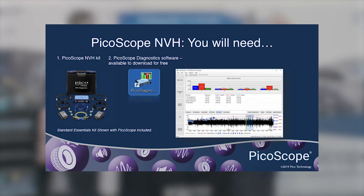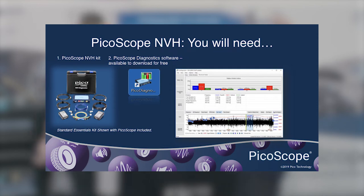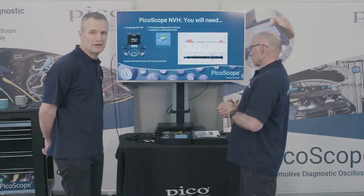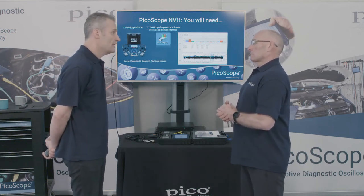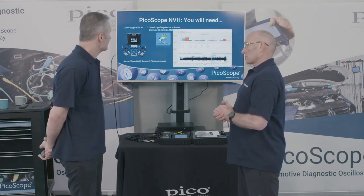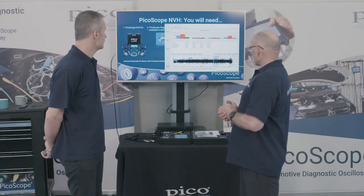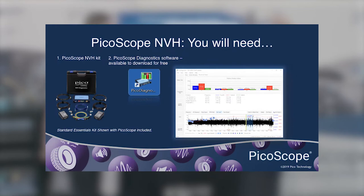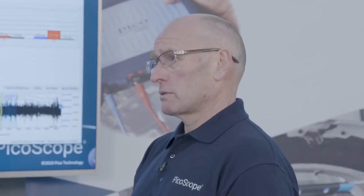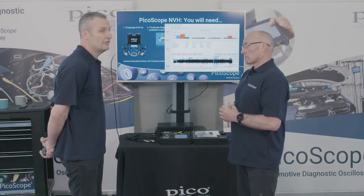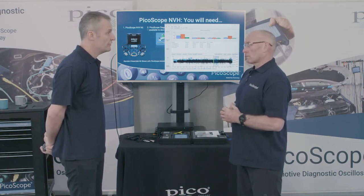To measure NVH, the standard essentials kit includes a four-channel scope, two microphones, and two accelerometers. You'll also need the PicoDiagnostics software — NVH is contained within the free software. Results are displayed using the bar graph screen within PicoDiagnostics. The software license is given freely on purchase: when you buy an NVH kit you provide the serial number of the scope and interface, which releases a license key to unlock your scope for NVH.